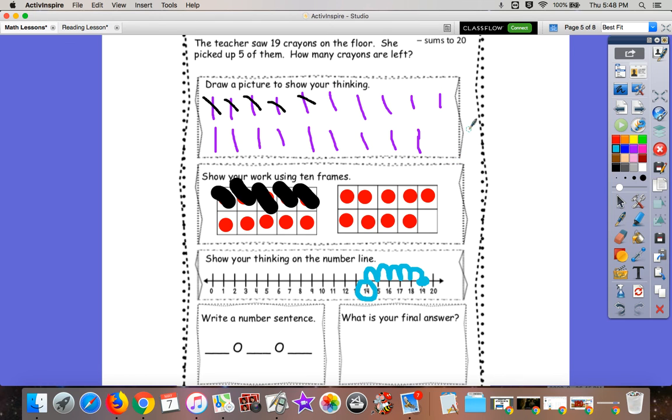So we showed our work with our picture, with our 10 frame, with our number line. And now we move on to our number sentence, our equation. So we're just putting all these words down here. So it's 19. There were 19 crayons. The teacher picked up five. And that equals 14 still left on the floor.